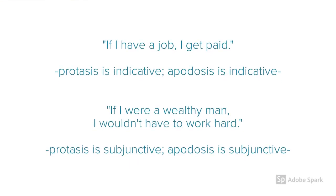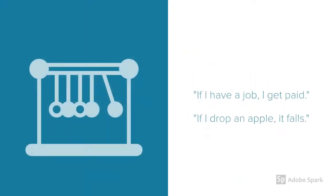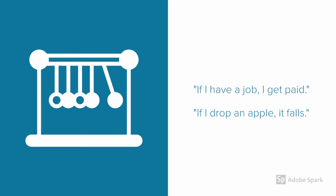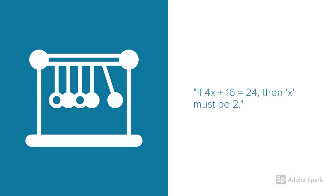But there's a difference. 'If I have a job, I get paid' — it's all in indicative. 'If I were a wealthy man' — it's all in subjunctive. Why the difference? Well, one is: if this happens, then this will necessarily happen. If I have a job, I necessarily get paid. If I drop an apple, it necessarily falls. This can even be stated mathematically: if 4x plus 16 equals 24, then x must necessarily be 2.